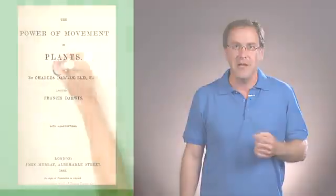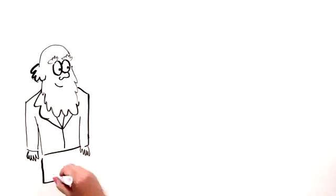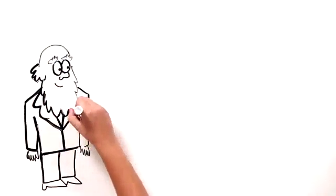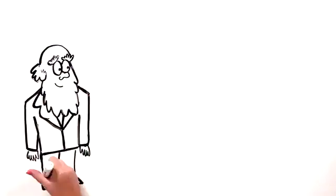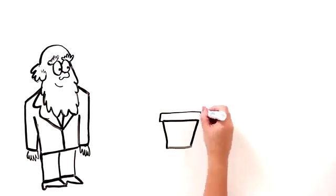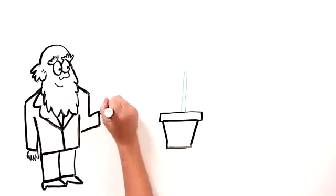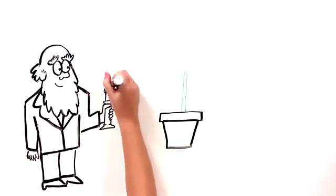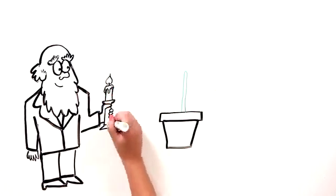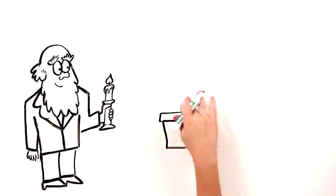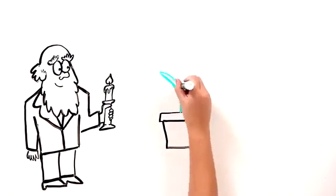And what Darwin noticed, and here he was studying many types of plants, but to take, for example, he was studying a certain type of grass called canary grass. If you put the canary grass in a room with only a very dim candle on one side of the room, and I think Darwin wrote about it saying that it was so dim that he couldn't even see the clock on the wall, the plant, in this case the grass, bent towards the candle.